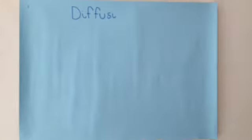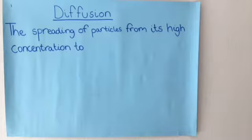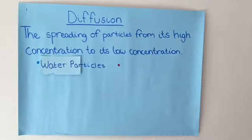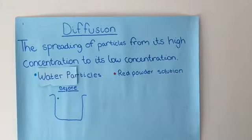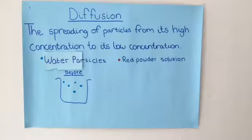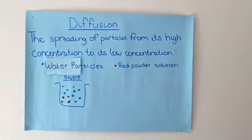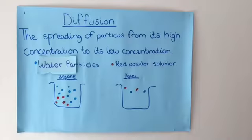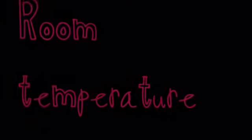Diffusion is a process when particles move from its higher concentration to its low concentration. As you can see in the two pictures, when the red powder solution is first added to the water, the particles are in the corner. However, after some time, they mix with the water and diffuse. Diffusion is quicker in warmer temperatures as the particles have more energy and move quicker.